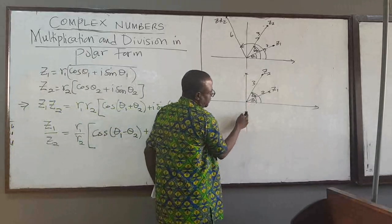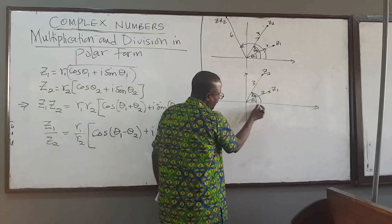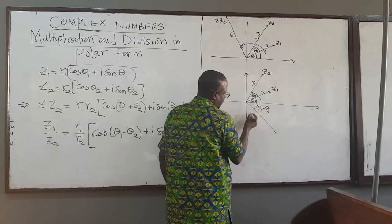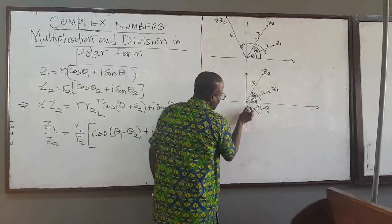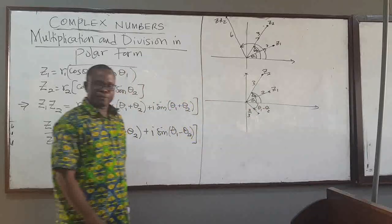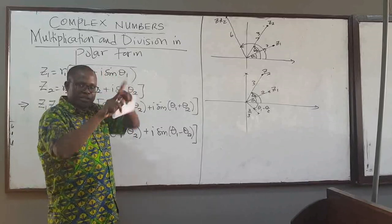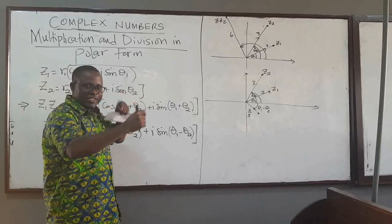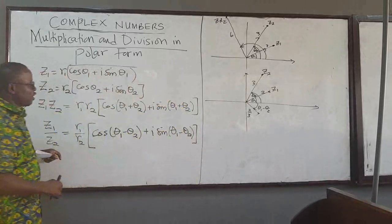Suppose both angles are positive. Then theta 1 minus theta 2 is going to be a negative angle, so the resulting complex number is going to be somewhere below the real axis. The angle is theta 1 minus theta 2, which is negative, but the distance is going to be a shorter distance — 2 over 3. So when you are dividing, you are flipping — you are rotating — and at the same time you are scaling the modulus of the resulting complex number. That is geometrically how you think about the multiplication and division of complex numbers.